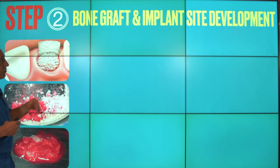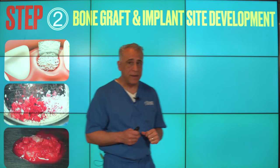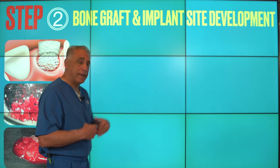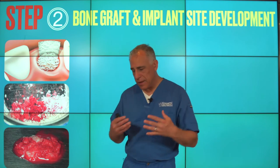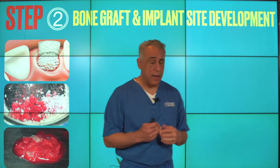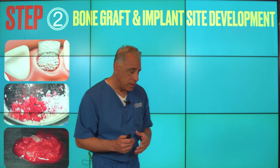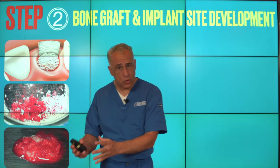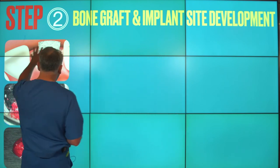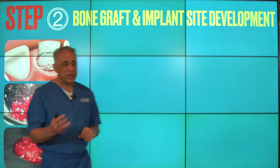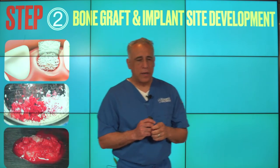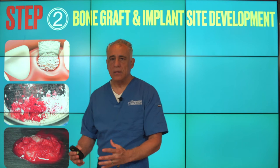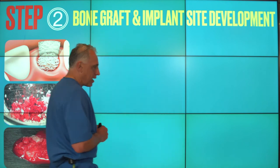Step two is bone grafting and development of the site for an implant later. The critical factor in deciding the timing of the bone graft is really the health of the soft tissue. If we have good, relatively healthy gum tissue in terms of both quality and quantity, it may be possible to perform the bone graft at the time of extraction. However, in circumstances where the gum tissue has undergone recession, is very thin, or is quite infected, it is best to stage it — let the site heal, come back in about two or three months, and then perform the bone graft at that point.